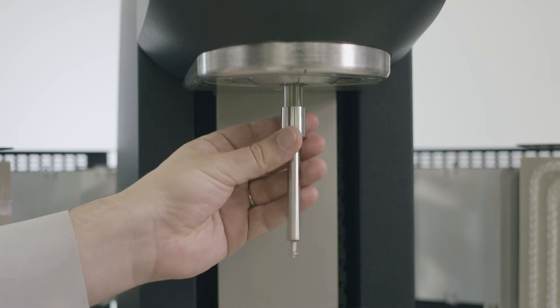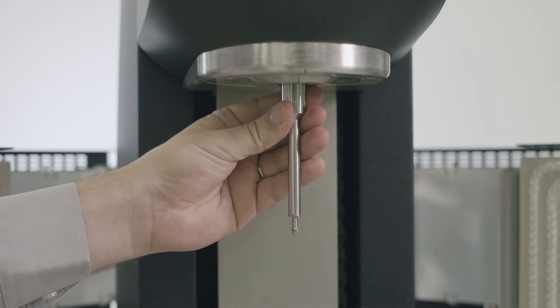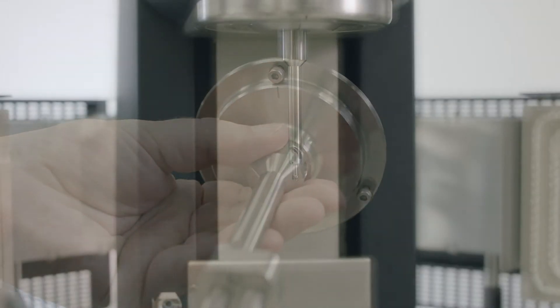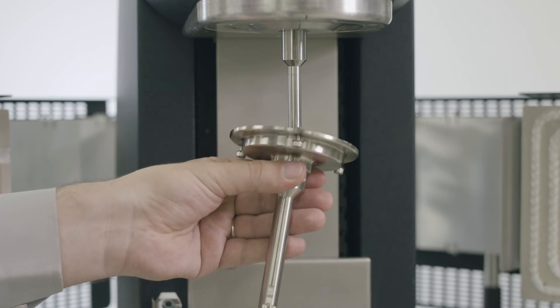Install the driveshaft onto the rheometer using the standard draw rod. Line up the EVA assembly with the driveshaft and slide the EVA assembly over the driveshaft.